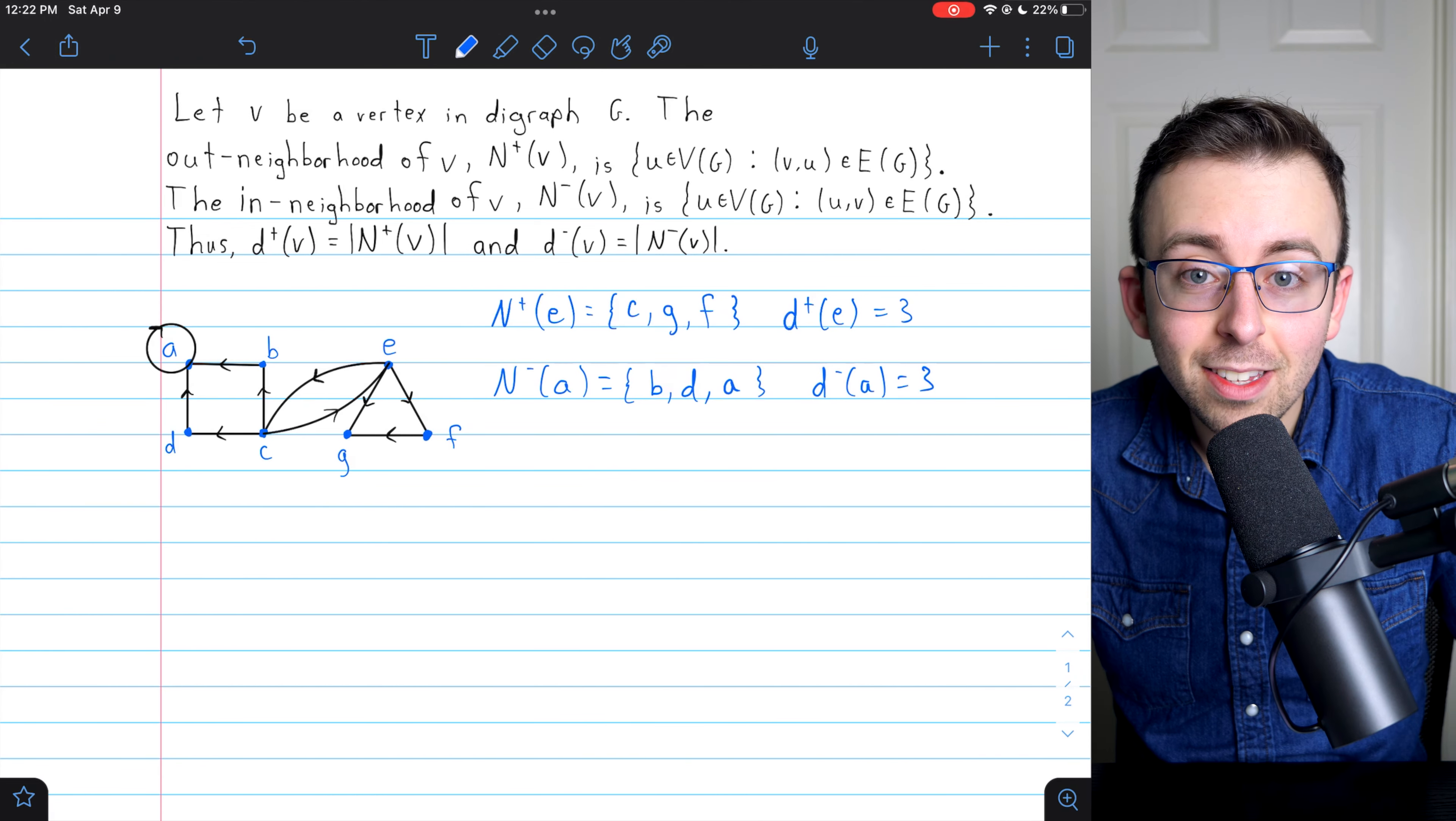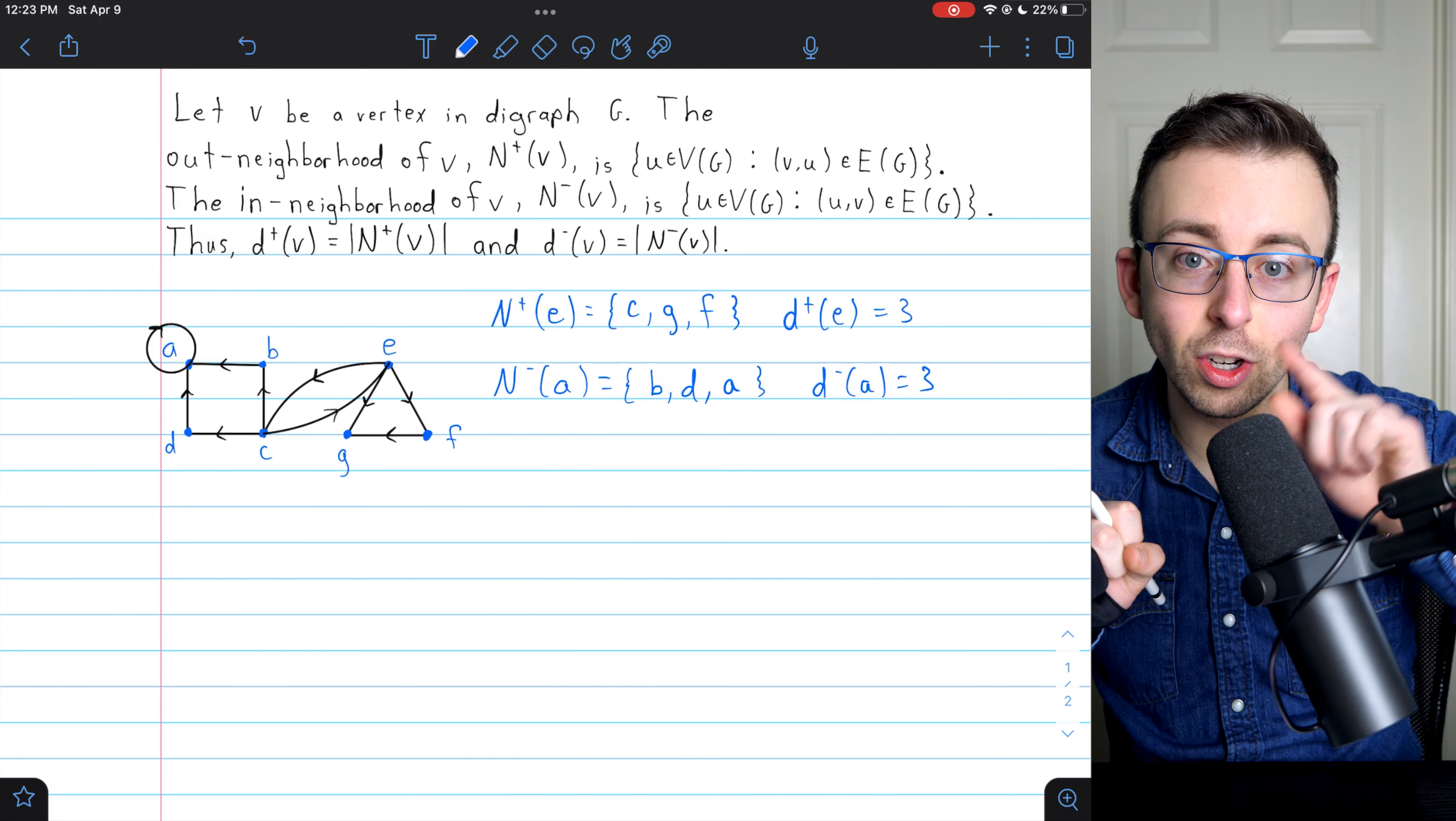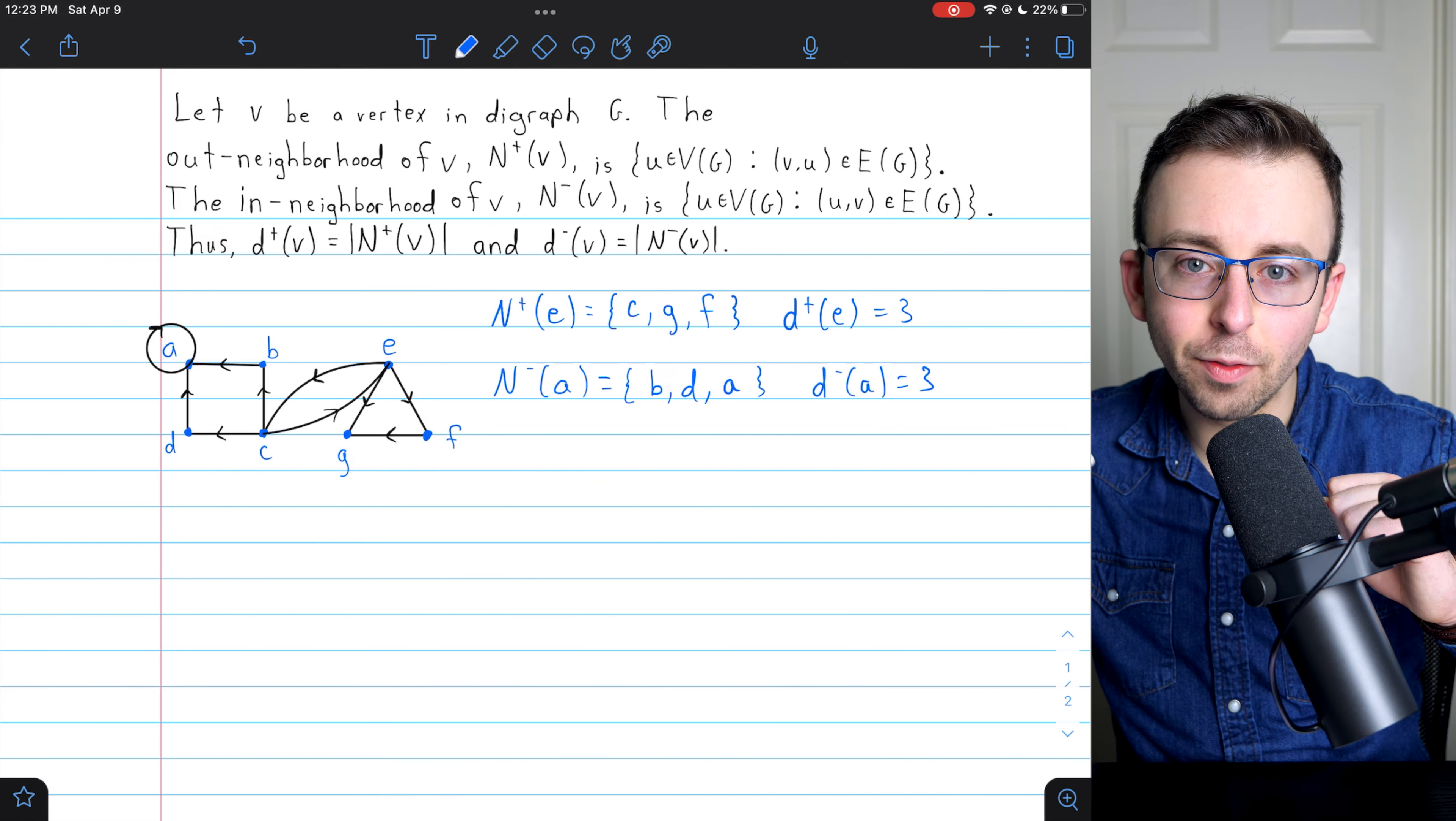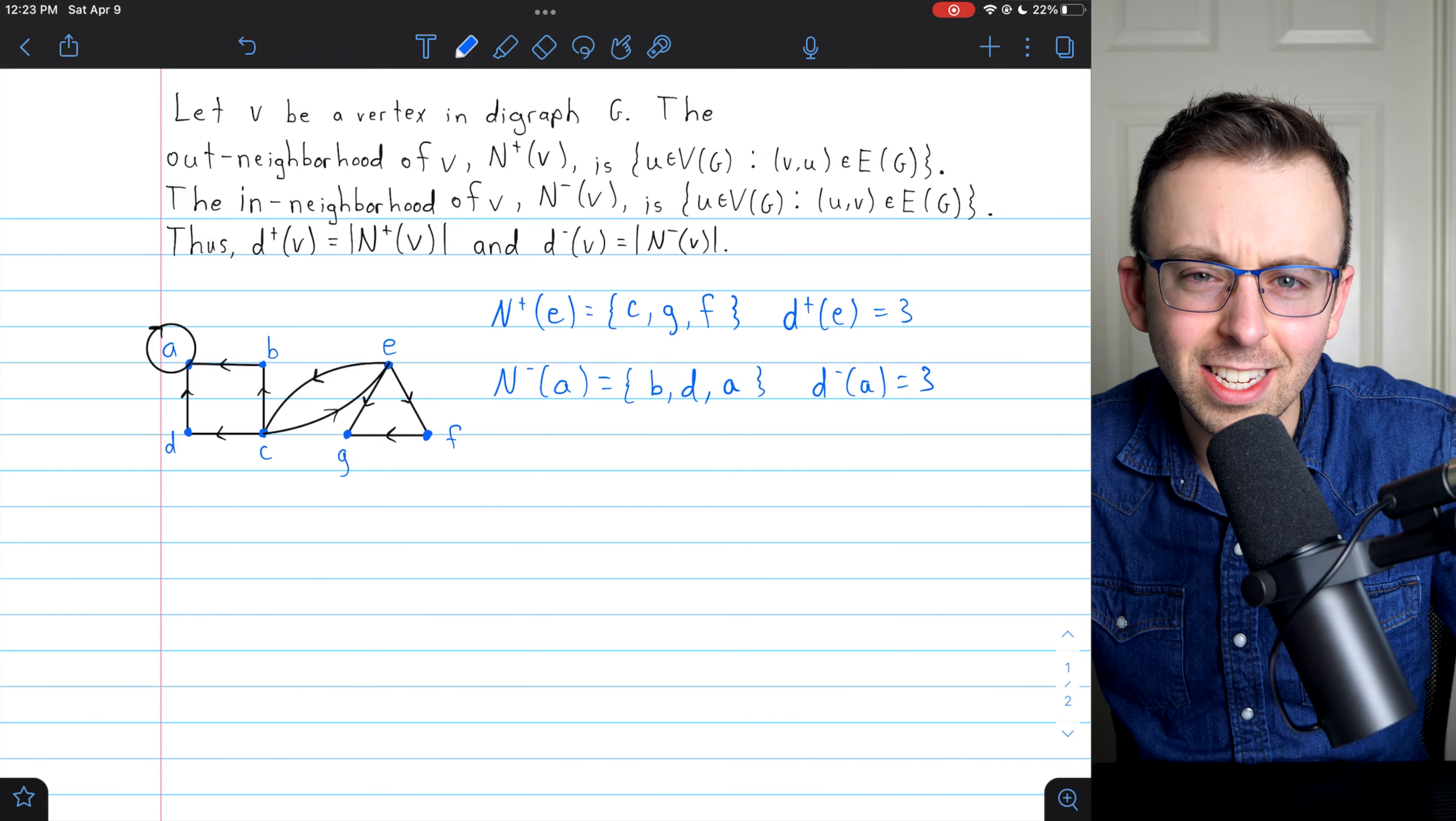And that's all there really is to say at this moment about out-neighborhoods and in-neighborhoods. The out-neighborhood of a vertex is the set of vertices that the vertex is adjacent to, and the in-neighborhood of a vertex is the set of vertices that go in to that vertex. Let me know in the comments if you've got any questions or lesson requests. See you next time.